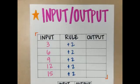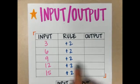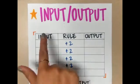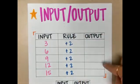All right. Today we're going to talk about input and output and what does that look like? So right here we have our table. We have input, we have rule, and we have output.